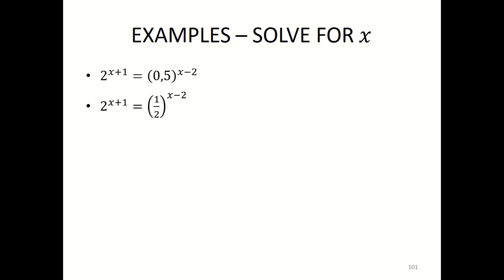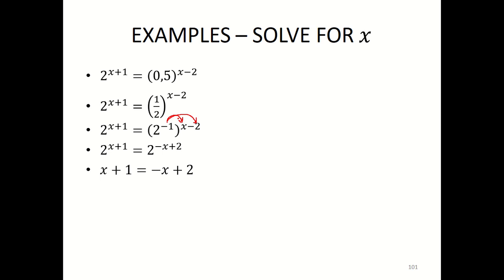Here you will simply change 0.5 — 0.5 is the same as 1 over 2. Write that 1 over 2 in simplest exponential form: it will be 2 to the exponent of negative 1, still in brackets. Then you can start breaking the bracket, which will give minus x plus 2 as the exponent on the right-hand side. The bases are the same — drop them, equate the exponents, and transpose. The signs change whenever they cross the equal sign: 2x equals 1, so x equals a half.